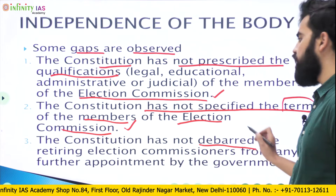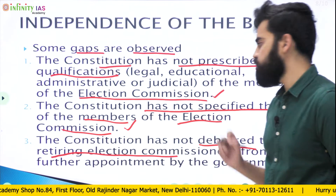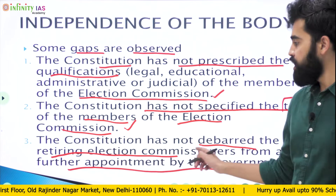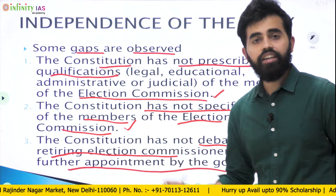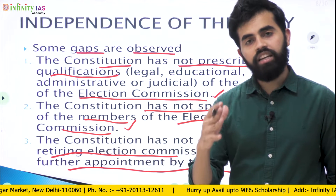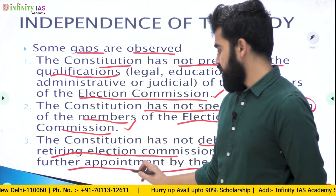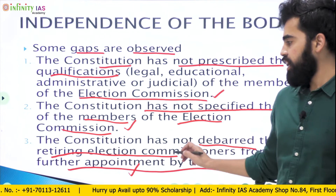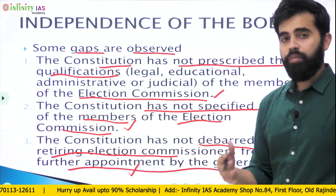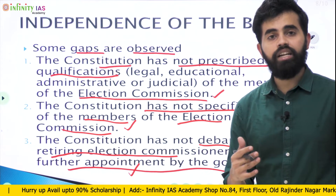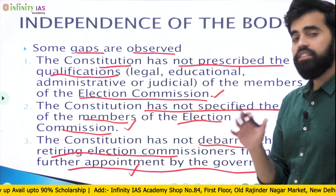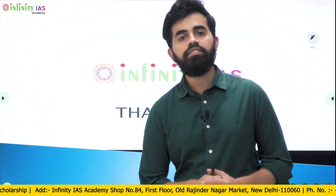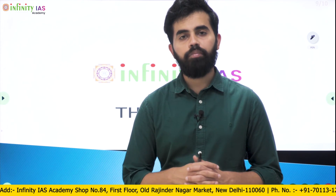Furthermore, the constitution has not debarred retiring election commissioners from further appointment by the government. This means election commissioners who retire from the election commission can be appointed by the government of India later on. This leaves a gap in the independence of the commission, as election commissioners might be influenced by the posts that can be offered by the government after their retirement, which decreases the independence of the commission. That brings us to the end of election commission as a topic. Thank you.